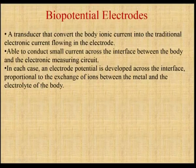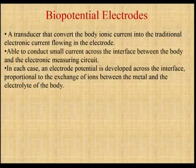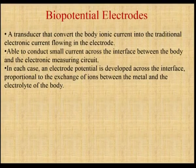We can consider this electrolyte as the body liquid. The transducer is used to convert the body's ionic current into traditional electric current because of the electrode measurement. From here, we can conduct and measure the small current occurring at the interface between the body and the electronic measuring circuit. An electrode potential is developed because of the interface across the solutions, and it is proportional to the exchange of ions between the metal and the electrolyte of the body — which represents liquids and fluids present inside the body.